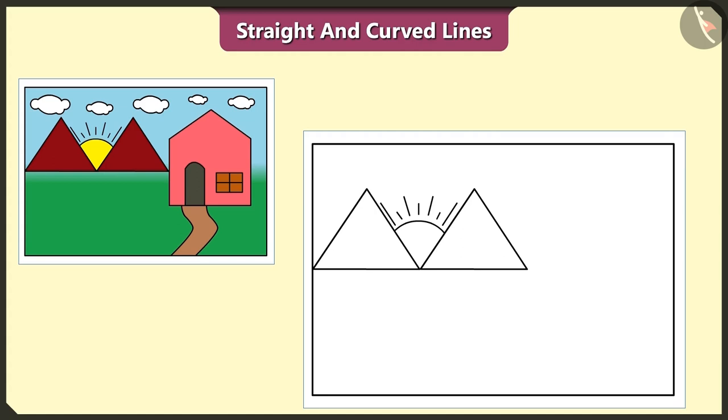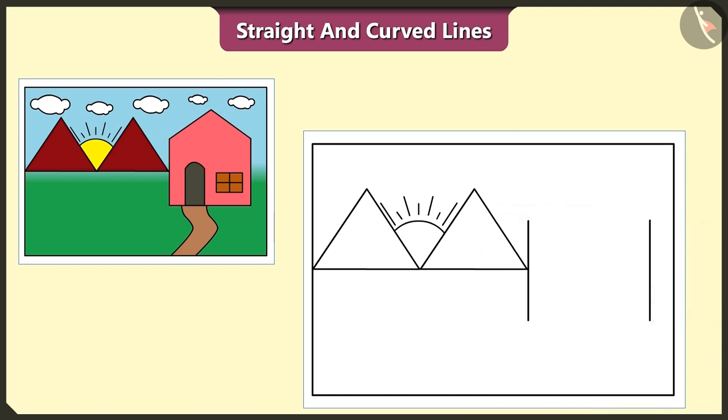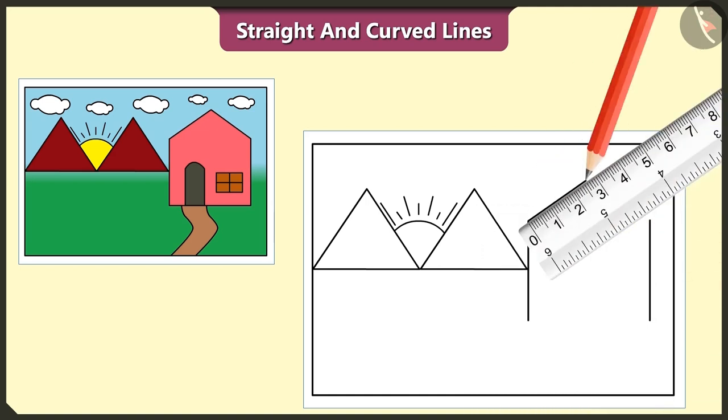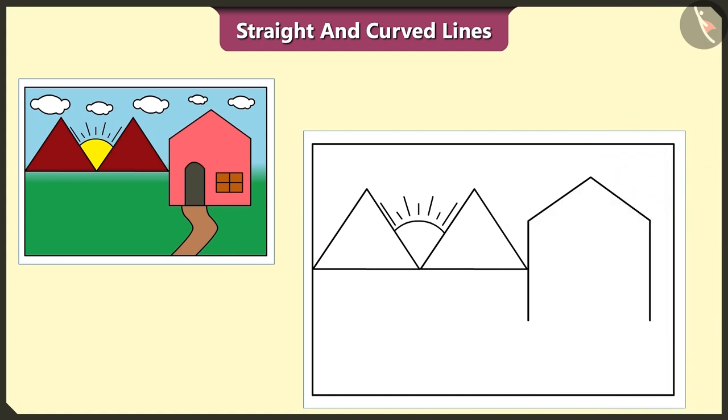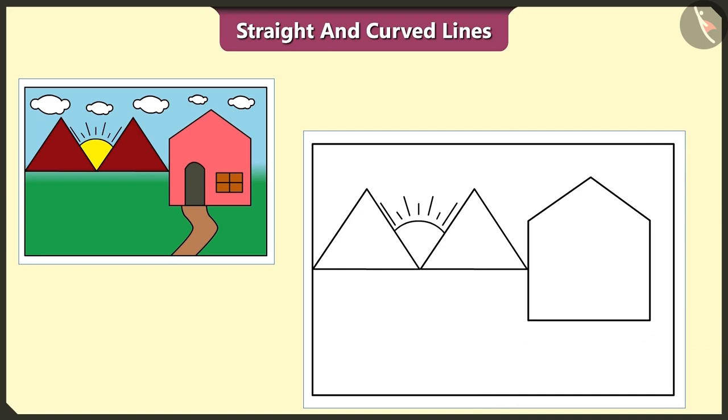Let's draw a house using both straight and curved lines. Yes, first of all, we have to draw two straight lines like this. Let's draw two more straight lines above these straight lines. Let's draw one more straight line at the base of these two straight lines.